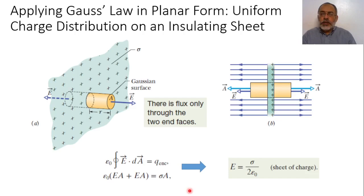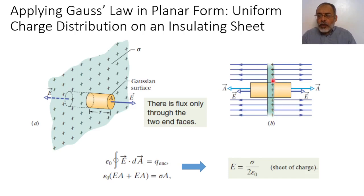Now the question is: what will be the situation if we are talking about an insulating sheet? The main difference between an insulating sheet and a conducting sheet is that the insulating sheet allows the electric field due to the charge distribution to exist in both forward and backward directions. In the case of a conductor, the electric field inside is zero.